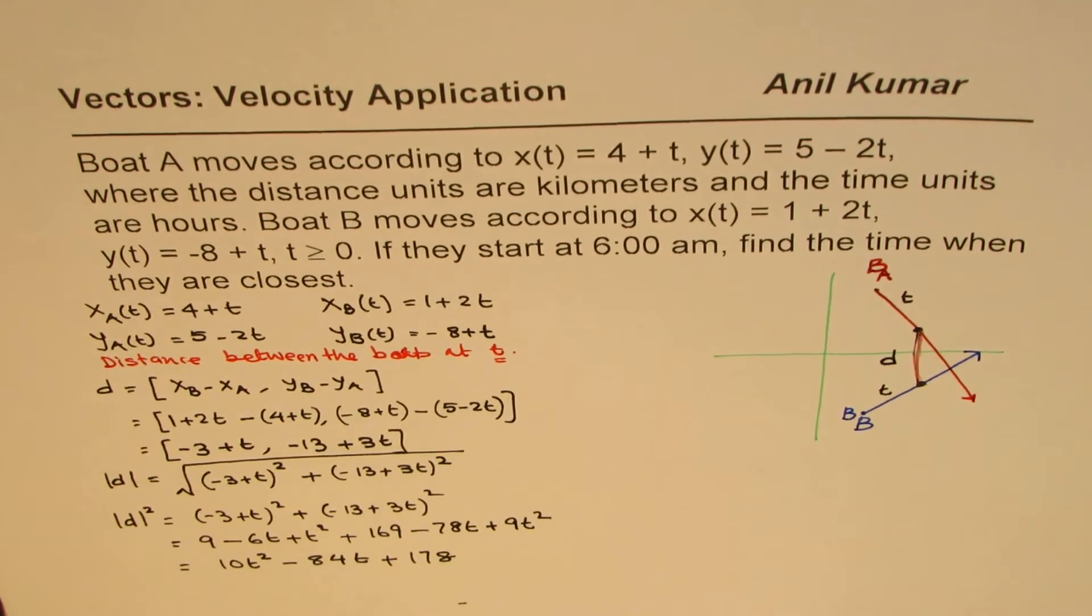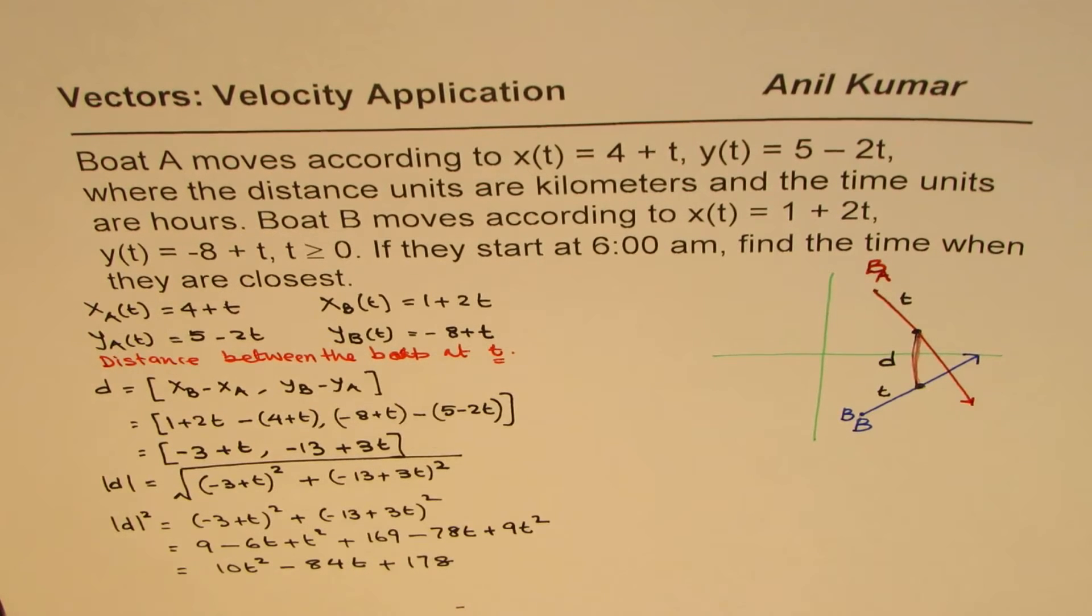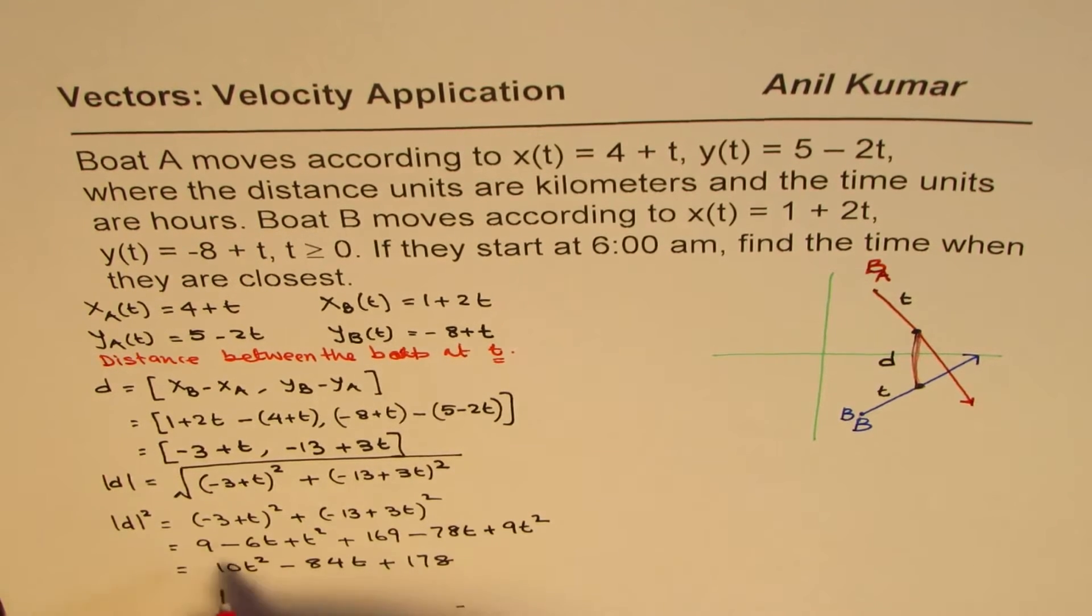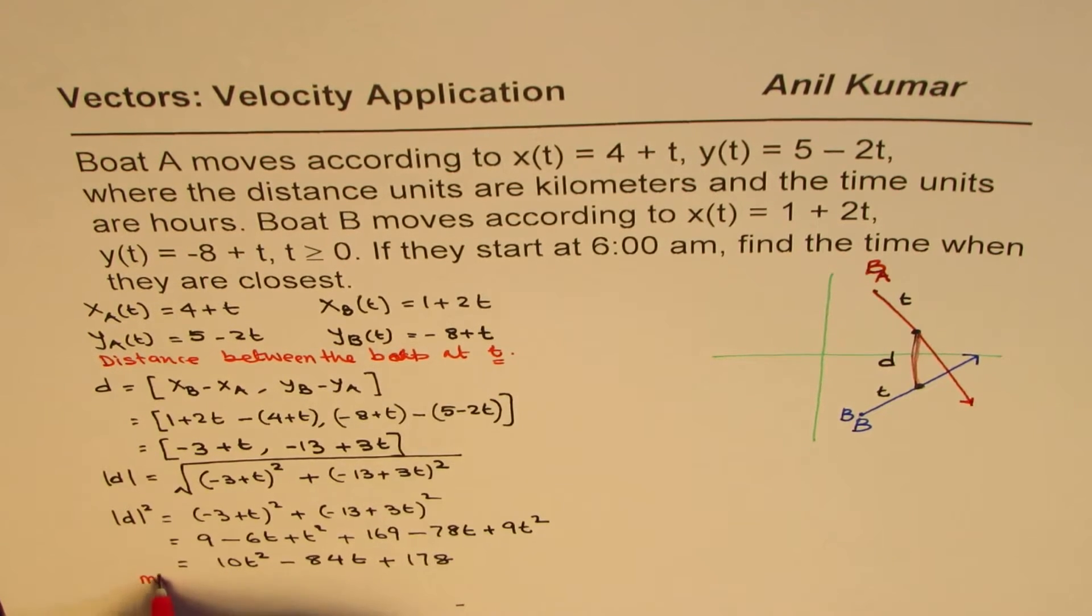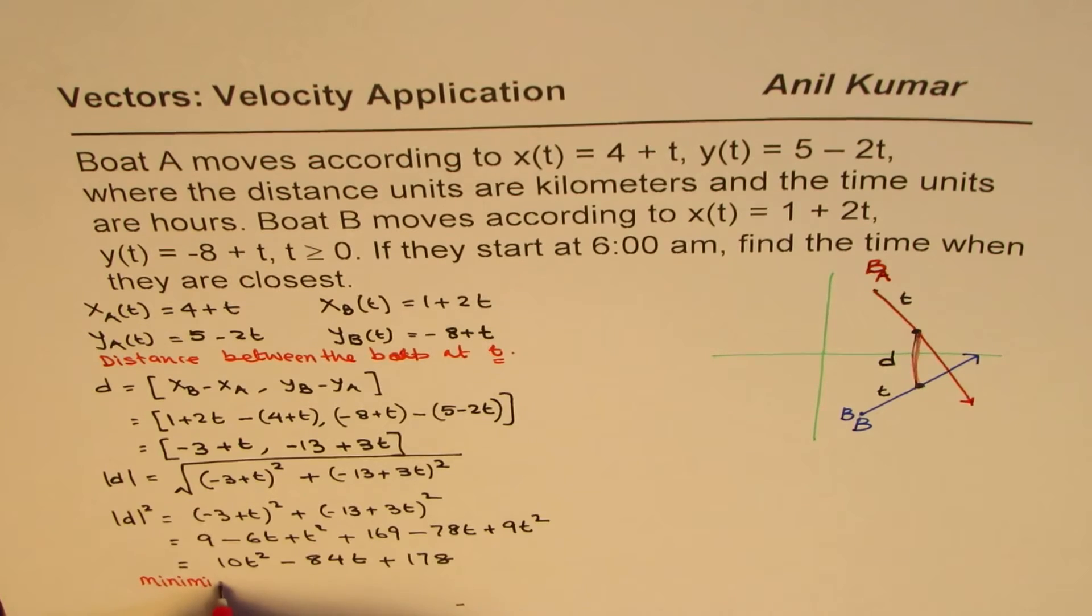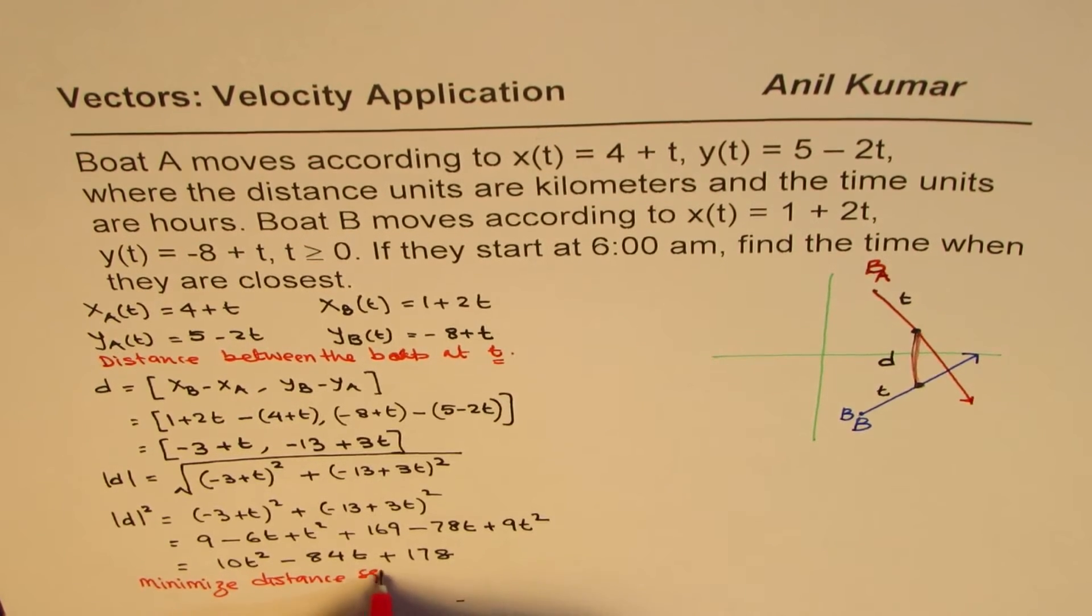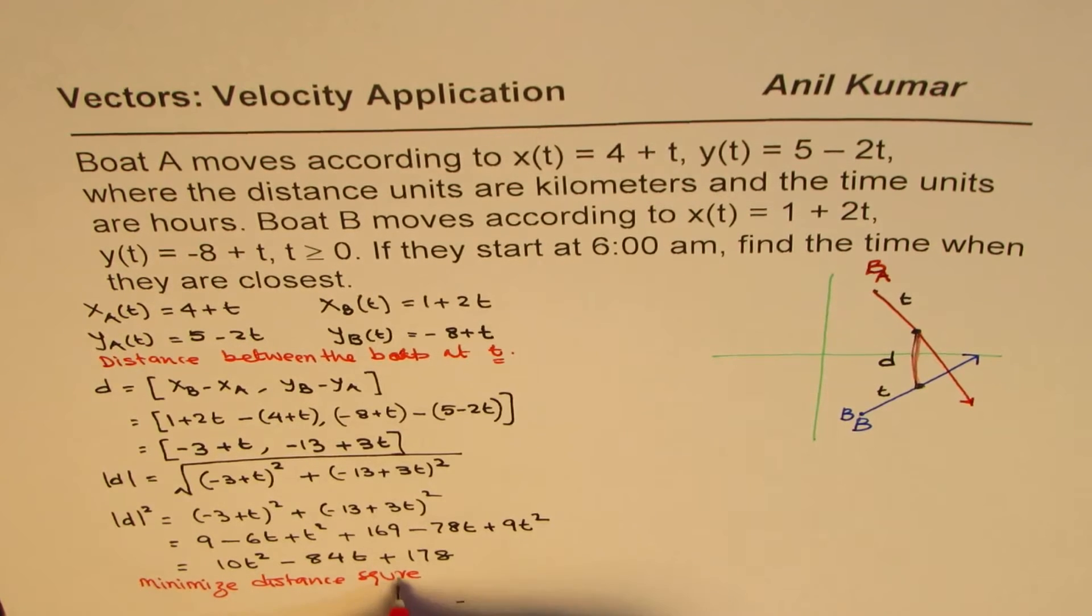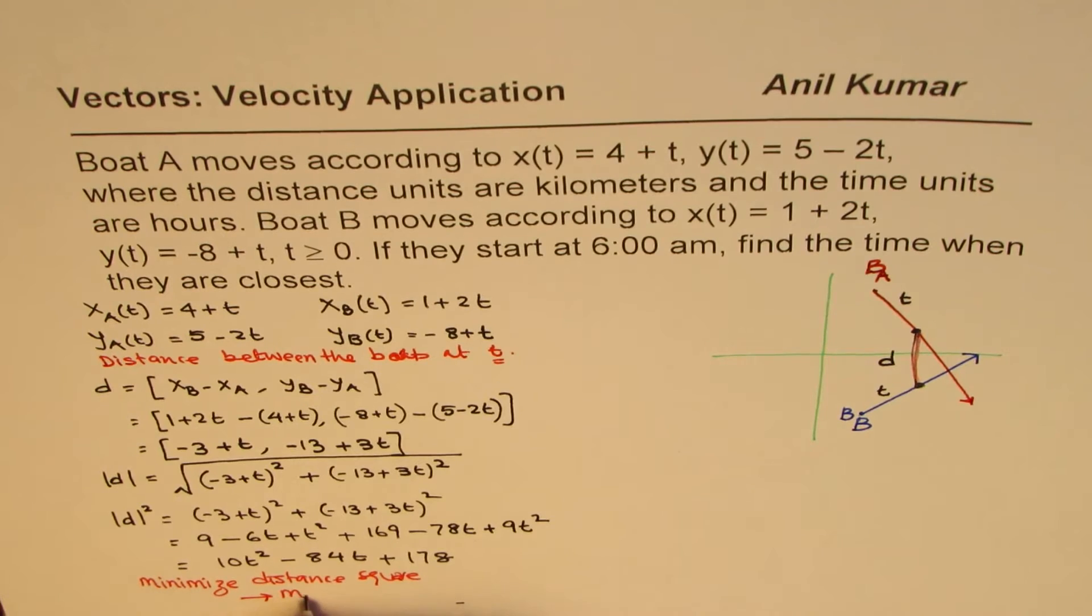So that is your distance squared between the two boats at any time. So we are minimizing distance squared. Distance squared when minimized will also mean minimum distance.